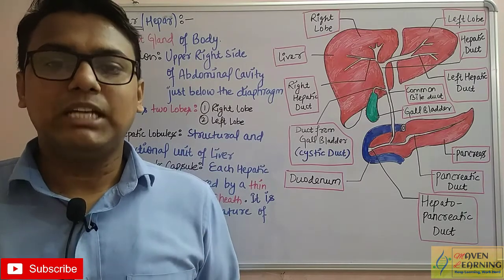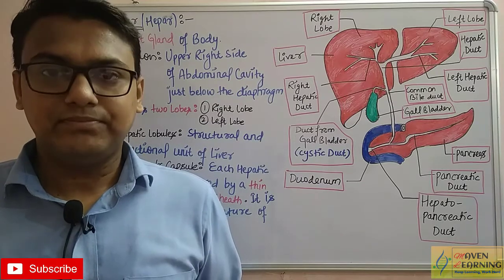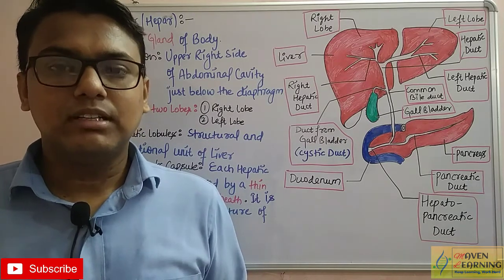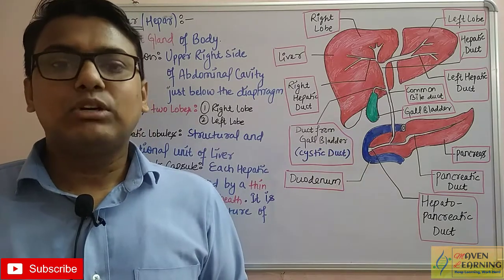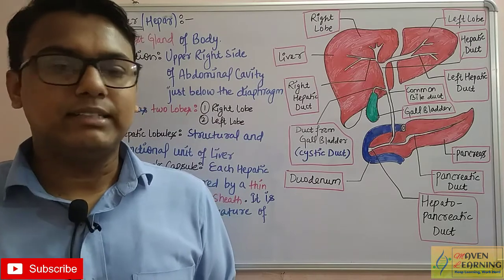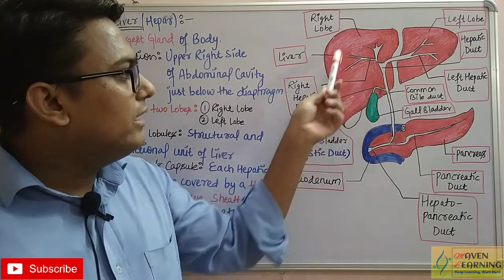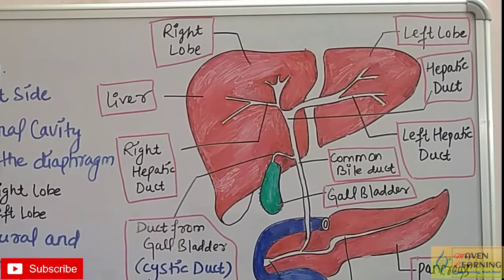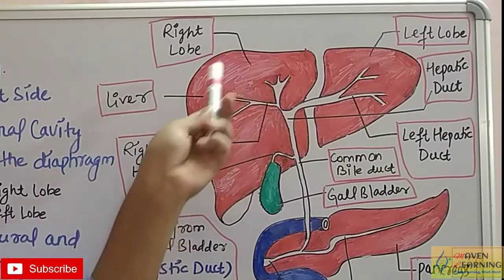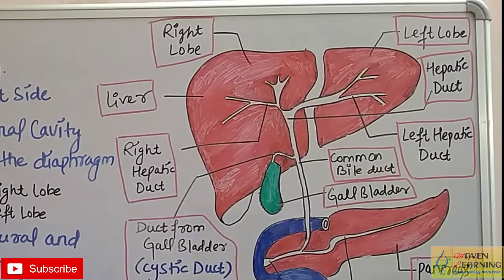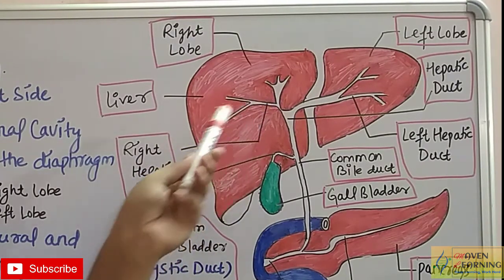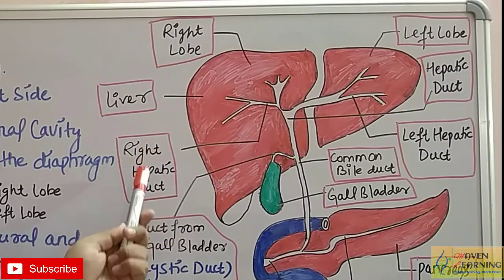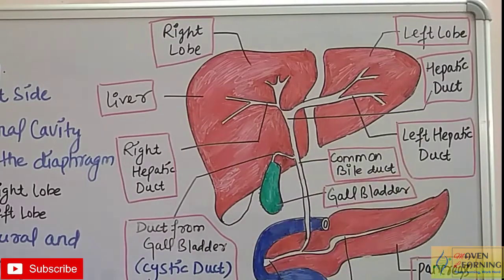Looking at the liver diagram: there is a right lobe and a left lobe. White tube-like structures in each lobe are ducts. The duct in the right lobe is called the right hepatic duct, and the one in the left lobe is the left hepatic duct. Hepatic cells produce bile, which travels through these ducts downward into a thin sac-like structure called the gallbladder.